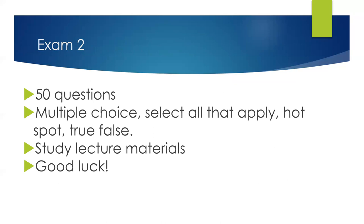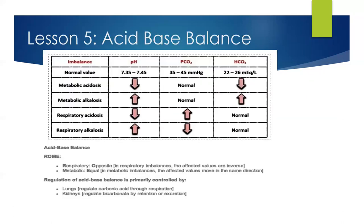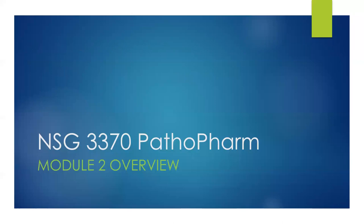For exam two, the exam is 50 questions: multiple choice, select all that apply, one hot spot question where you have to point to a specific location showing a level of lung damage, and a few true and false questions. To study and prepare, review the lecture materials — only the recorded lectures. There are three recorded lectures: respiratory, acid-base balance, fluid, and neural. Review those lectures and review this exam prep. There are only about 20 slides here, and these slides provide your study overview for this exam.